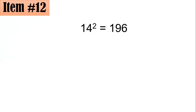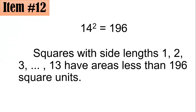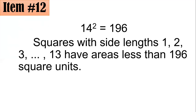To get the area of a square, it's side squared. Therefore, squares with side lengths 1, 2, 3, until 13 have areas less than 196 square units. You could have 1 squared is 1, 2 squared is 4, 3 squared is 9, all the way until 13 squared, which is 169.